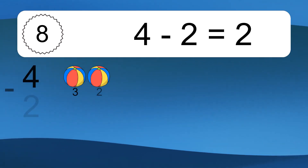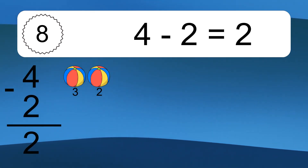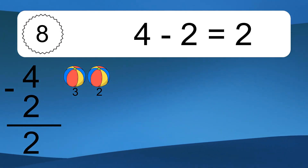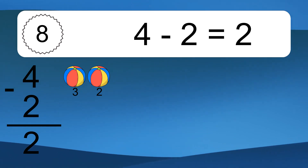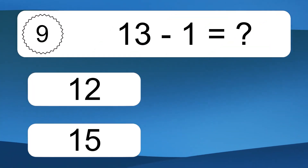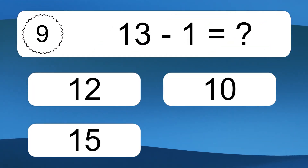4 minus 2 equals what? 4 minus 2 equals 2. Let's count it. 3, 2.